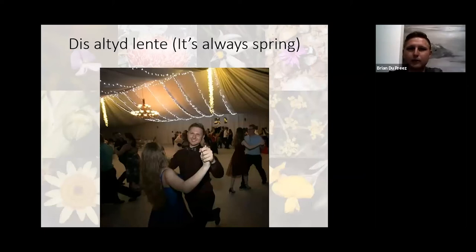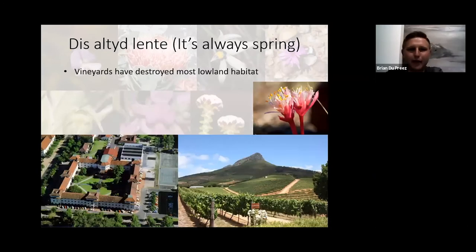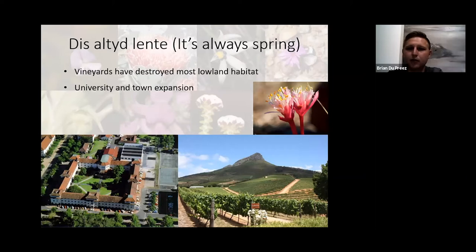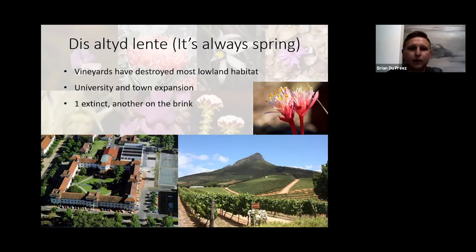Now we head to my hometown, Stellenbosch, where students love to dance. Students also need accommodation and wine, and unfortunately this has led to widespread destruction of lowland habitat in and around Stellenbosch. The university and town have expanded greatly over the past few decades, and one species — Soralia — has been lost from Stellenbosch, with the last locality now apparently under the Duck Break residence. The beautiful Haemanthus pumilio you see on the top right is also on the brink of extinction, with part of its last remaining habitat recently destroyed by the expansion of a new hostel.